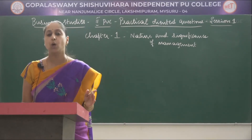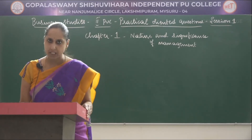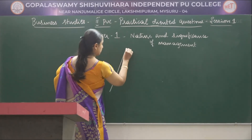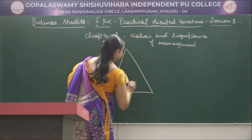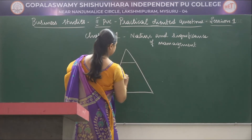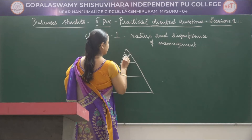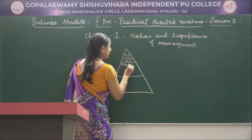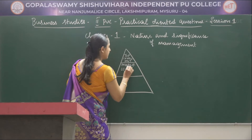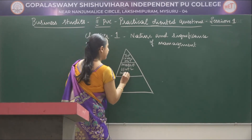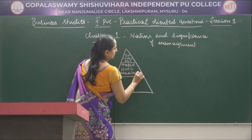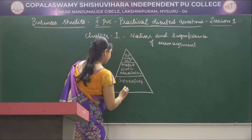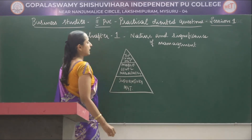As we know, there are three levels of management: top level, mid level, and supervisory level, that is lower level of management. Now we have to write the diagram. This is top level management, this is middle level management, and this is supervisory management. So these are the three levels of management.